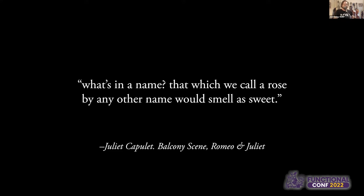So Juliet Capulet, who is in love with young Romeo Montague, while her family the Capulets and the Montagues are in a deadly feud, asks: 'What's Montague? It is not hand, nor foot, nor arm, nor face, nor any other part belonging to a man. Oh, be some other name. What's in a name? That which we call a rose by any other name would smell as sweet. So Romeo would, were he not Romeo called, retain that dear perfection which he owns without that title.'